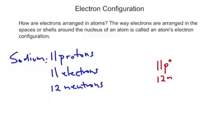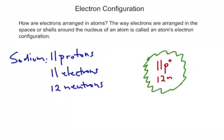The rule says that in the first shell, or space, around the nucleus of an atom, a maximum of 2 electrons can be held. The first shell can hold up to 2 electrons. This first shell is also referred to as the K-shell. So in the first, or K-shell, can be found up to a maximum of 2 electrons.